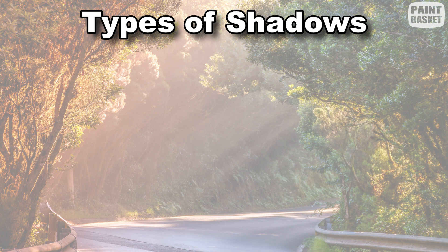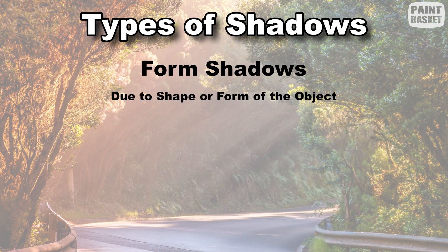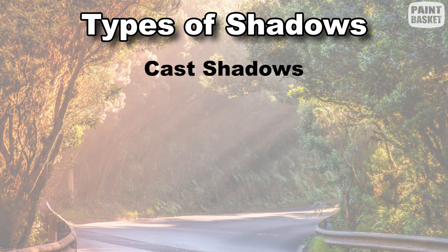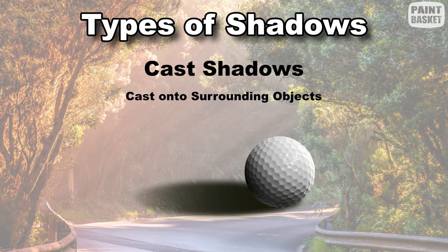You get two types of shadows. Form shadows are shadows caused due to the shape or form of an object. For example, one half of a bull is always in shadow because the sun or the light can't reach around to light up the back half of the bull. Then you get cast shadows, which is a shadow that one object casts onto the ones around it.